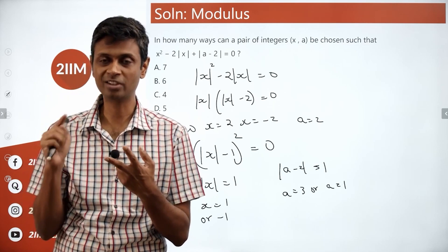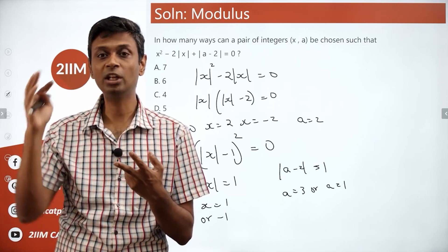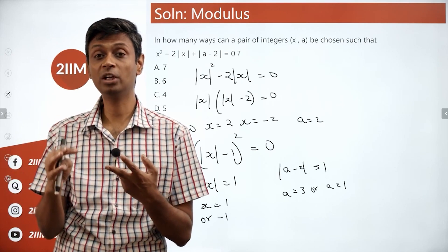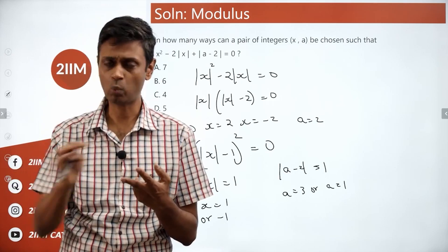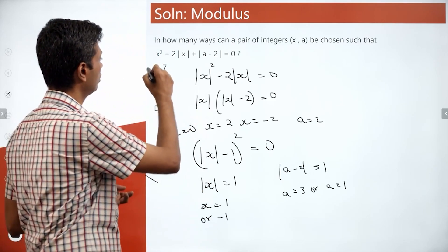Plug in the constant term to be 0, find all possible solutions, put the constant term to be 1 and find all possible solutions. Be rigorous—remember you're dealing with modulus of x, remember you're dealing with modulus of a minus 2. Wonderful question with a delightful seven answers.